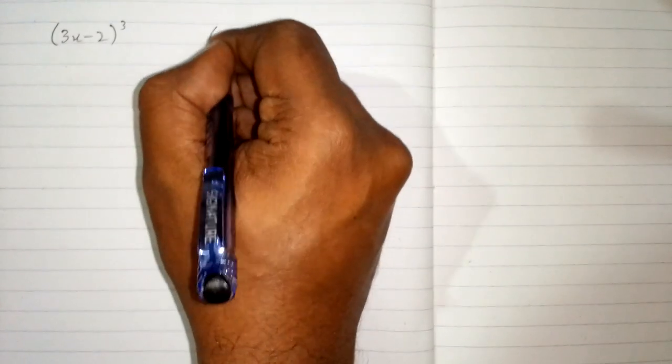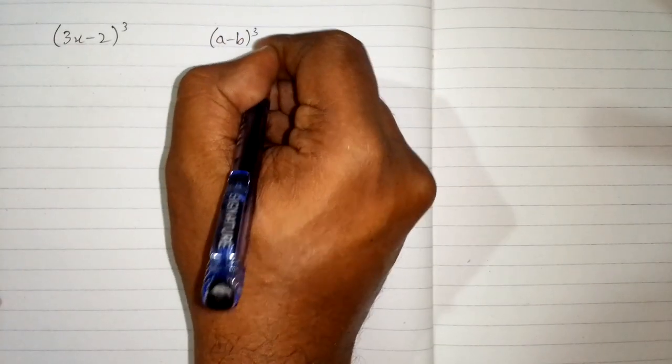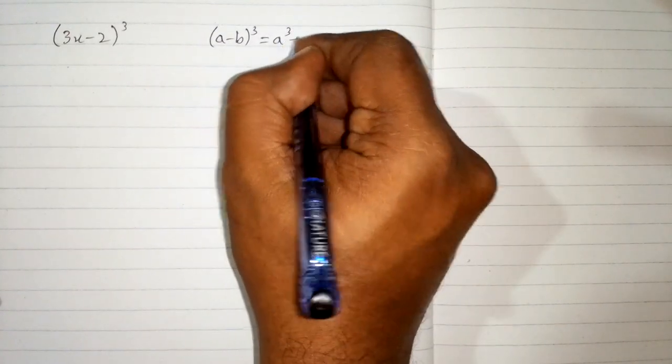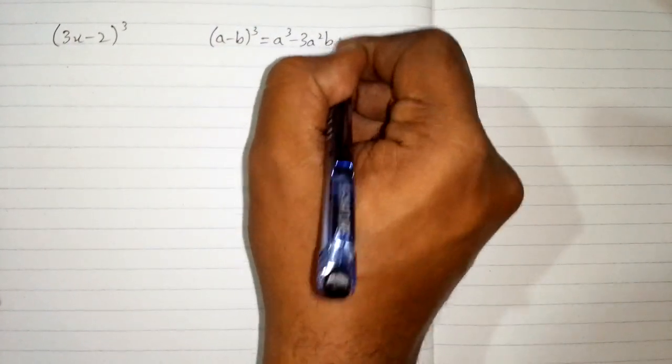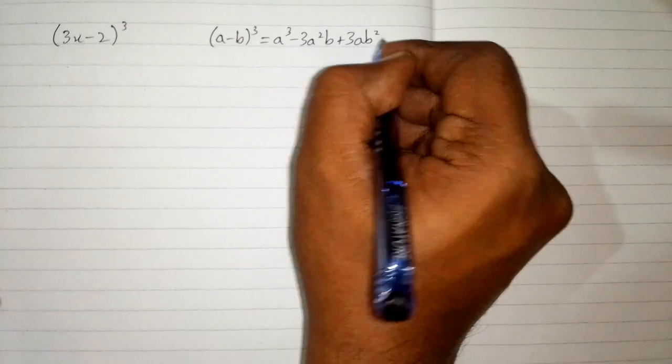In this video we will find the cube of 3x minus 2. So we can use the formula a minus b whole cube is equal to a cube minus 3a square b plus 3ab square minus b cube.